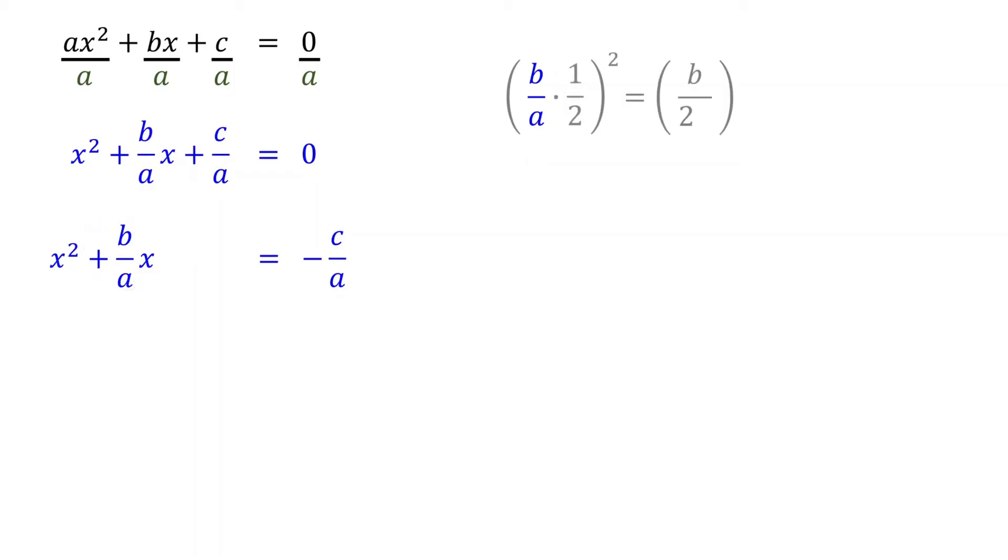Now, multiply across. Squaring these gives us b squared over 4a squared.